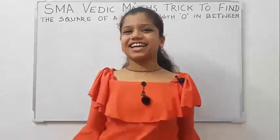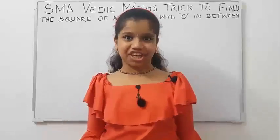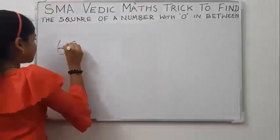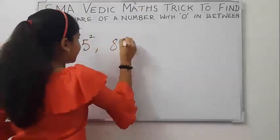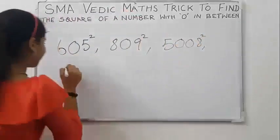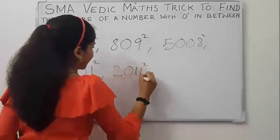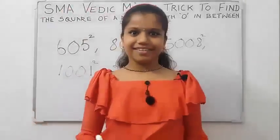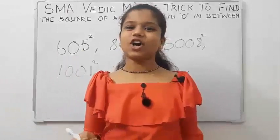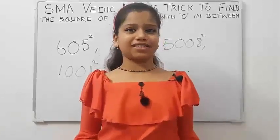Hi friends! Welcome back to my channel, Learn with Sumisha. Today we will learn a new Vedic Math trick to find the square of a number with zero in between. For example, 605 square, 809 square, 5008 square, 1001 square, 2011 square, etc. Do you want to do this in mind? Then please watch my video till the end. If you like this video, please like and subscribe to my channel and give your feedback in the comment box. Let's get started.